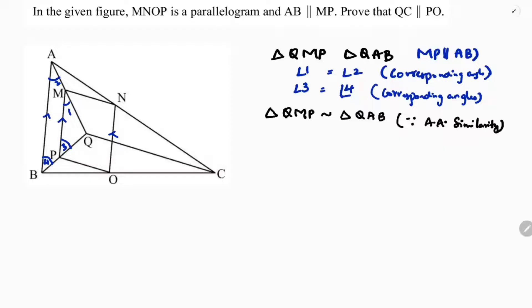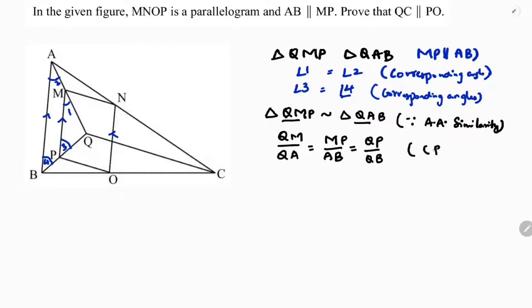So triangle QMP is similar to triangle QAB by angle-angle similarity. Writing sides proportional: QM/QA = MP/AB = QP/QB. This is by the properties of similar triangles — corresponding parts of similar triangles. We'll come back to this at the end.